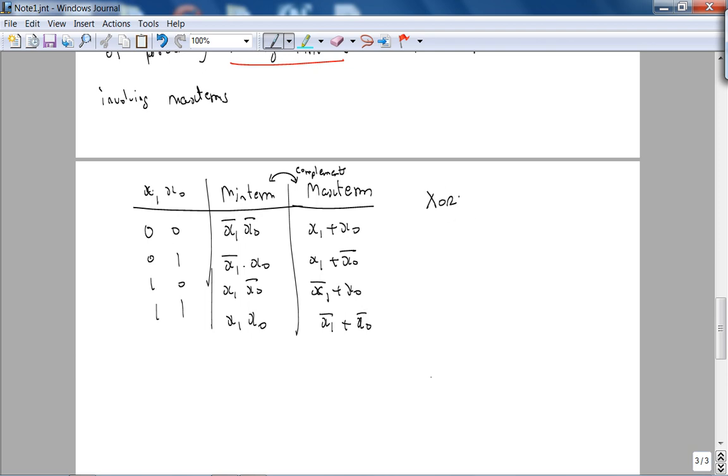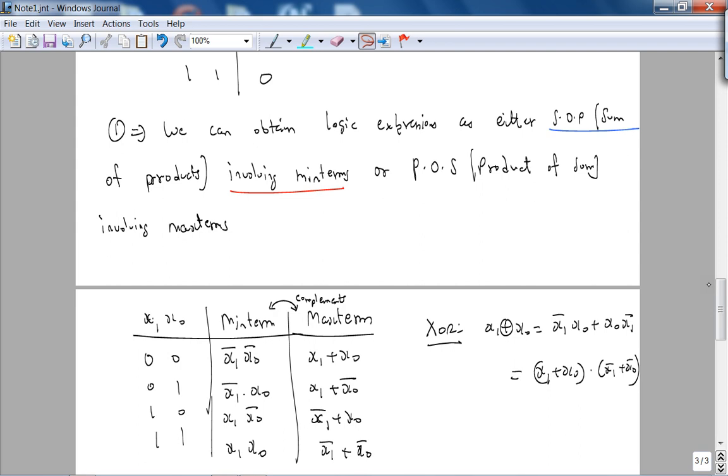So for the exclusive OR, x1 exclusive OR x0 recall is (x1 NOT AND x0) OR (x1 AND x0 NOT), but it can also be written using max terms, that is, you have to use the zero rows in the truth table which is (x1 OR x0) AND (x1 NOT OR x0 NOT). So this is the product of sums expression. If we think about it, if we actually simplify this, you are going to get this. You can just do this in your head. If you just use distributivity and the fact that x1 AND x1 NOT is zero, you basically get this. So again, very simple but powerful ideas.